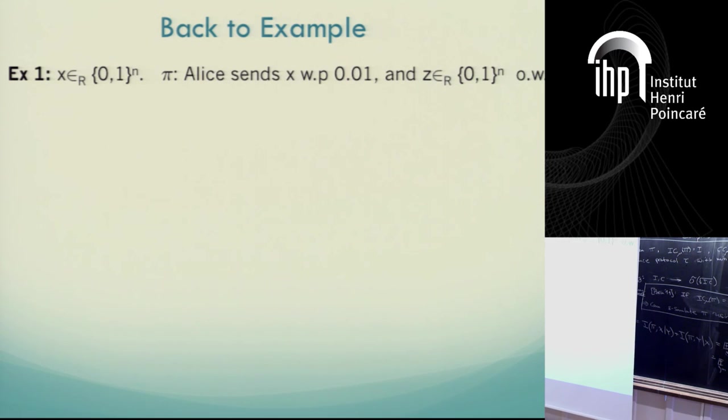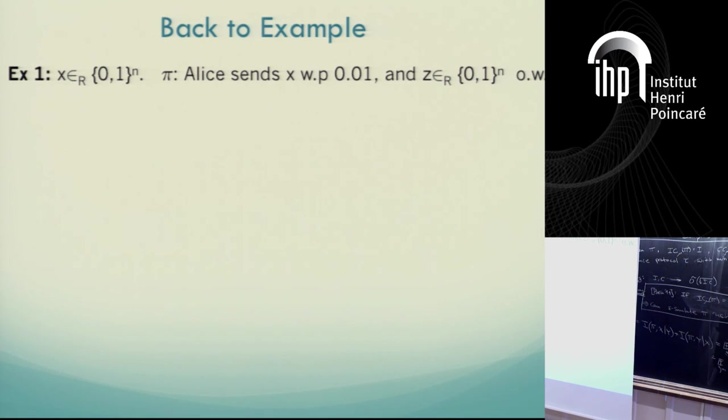Overall, the overall information cost of this protocol — the expectation over P and Q — is on the order of the entropy of (P-Q)^2.